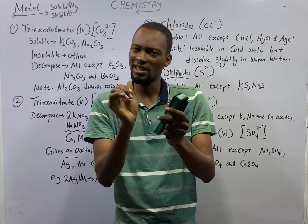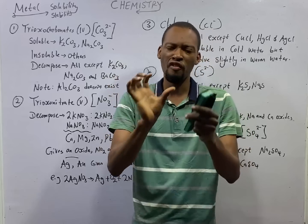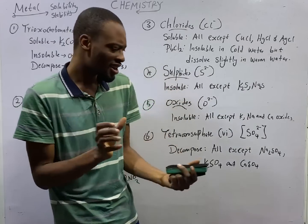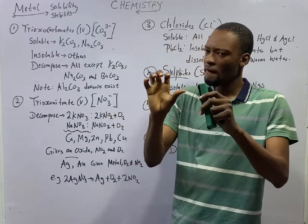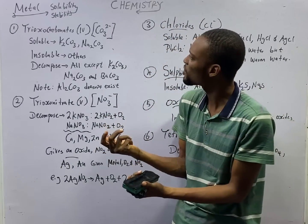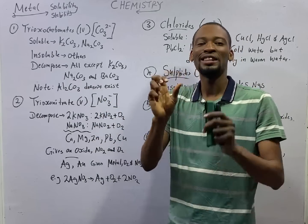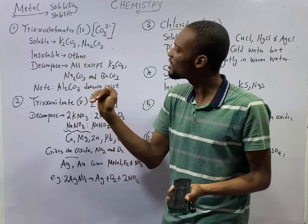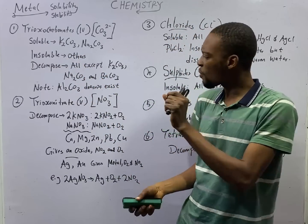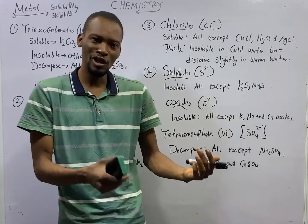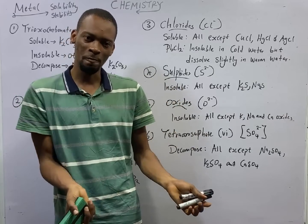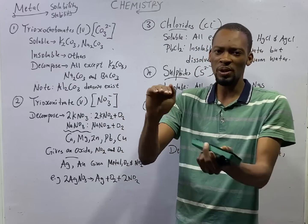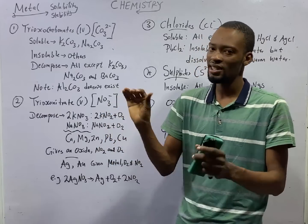In this episode, we shall be looking at the general properties of metallic compounds. We are still dealing with metals and their compounds, and these compounds of metals have properties that JAMB expects you to know — specifically the general properties of metallic compounds under solubility and stability to heat. Which compounds of metals are soluble, which dissolve in water, and which compounds decompose when heated or do not decompose when heated — all these are what we shall treat in this episode.